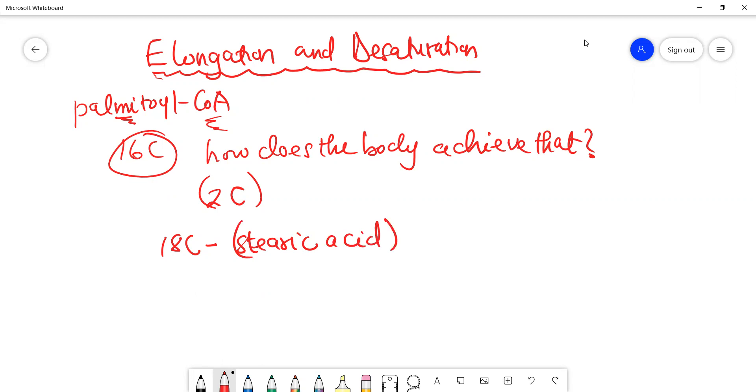Now this elongation that we are talking about occurs in two places in the body. Either it is within the endoplasmic reticulum, or it is happening in the mitochondrion.